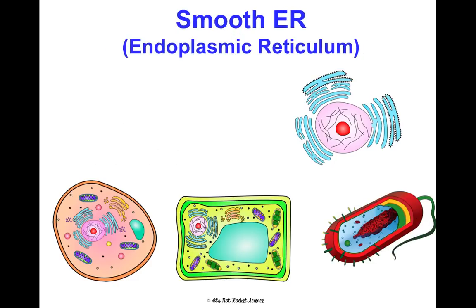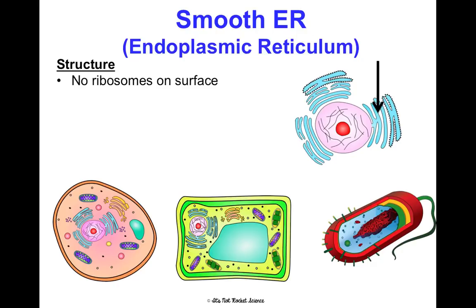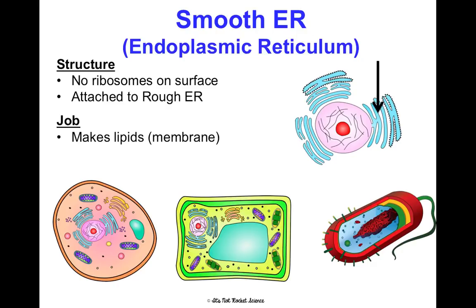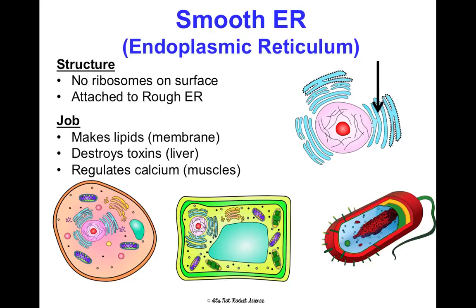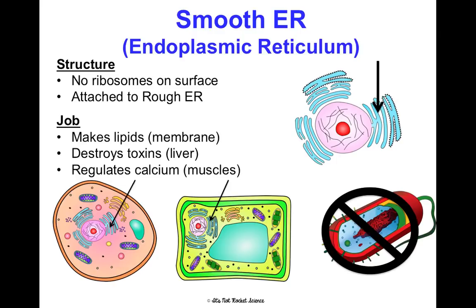The smooth ER — smooth endoplasmic reticulum — has no ribosomes on its surface, which is why it's called smooth. It's located right there with the rough ER and nucleus. Its job is to make lipids, so it actually makes membrane. It can also help destroy toxins — there's a lot of smooth ER in liver cells — and it can regulate calcium, which is important for muscle function. You can see it in animal and plant cells, not in prokaryotic cells.